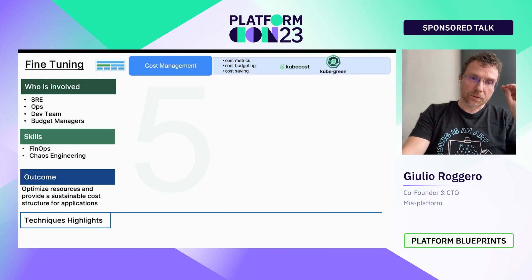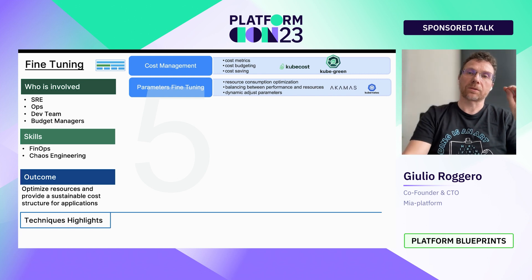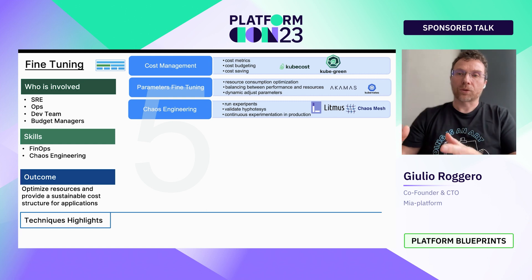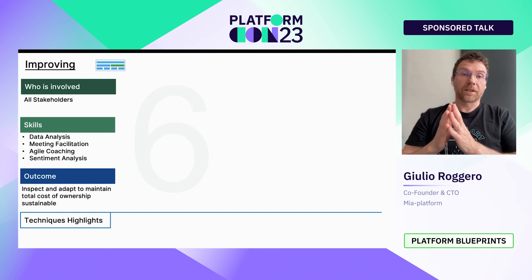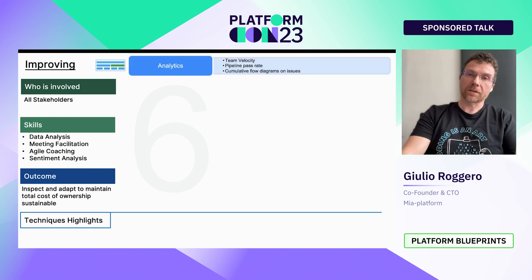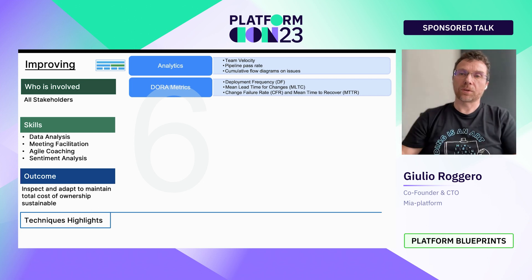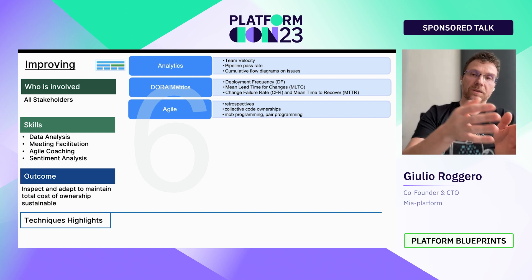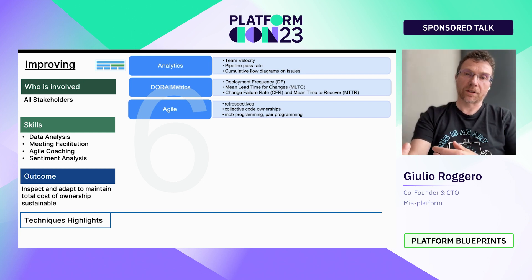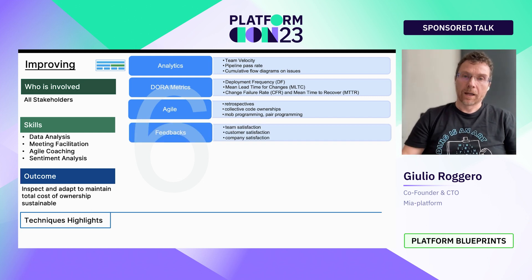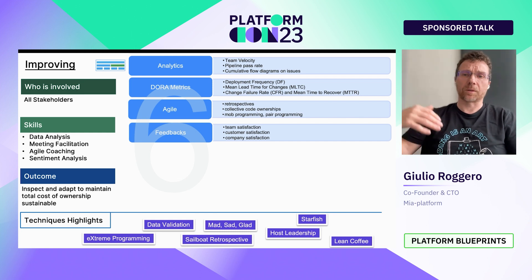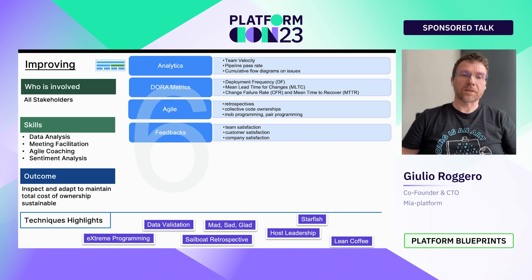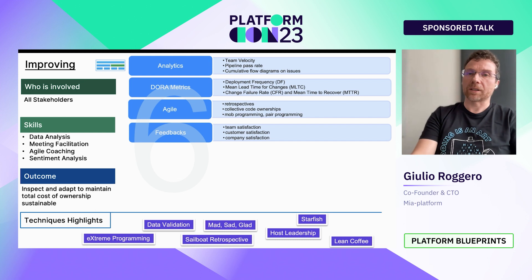The fifth blueprint is Fine Tuning — focus on reducing cost and maintaining sustainability. Manage your costs, fine-tune parameters for resource consumption optimization, and consider chaos engineering experimentation to improve reliability. The sixth blueprint is Improving. Analyze your metrics, apply them to your DevOps strategy, use agile retrospectives, code ownership, and pair programming to improve not just technology but also how people communicate. Gathering feedback is an important part of improving processes. Techniques from host leadership, retrospectives like sailboat and starfish, and Extreme Programming can all help.